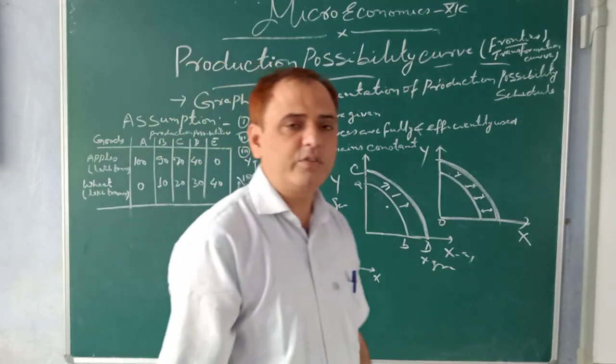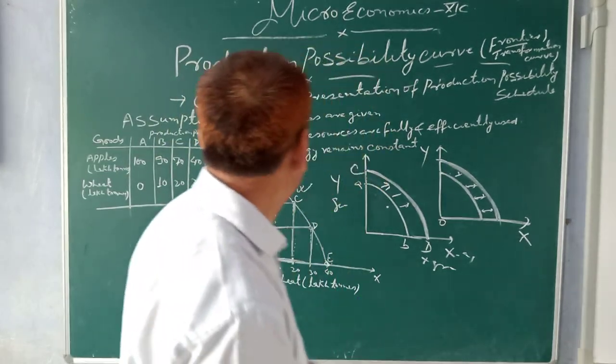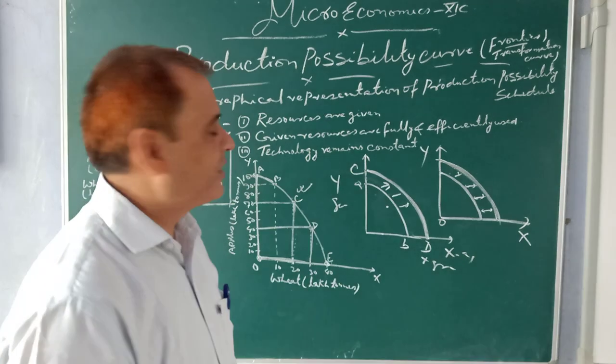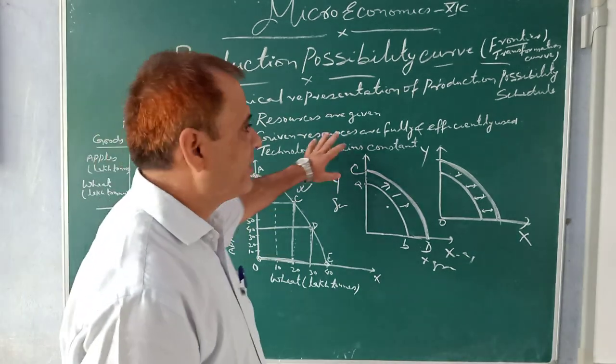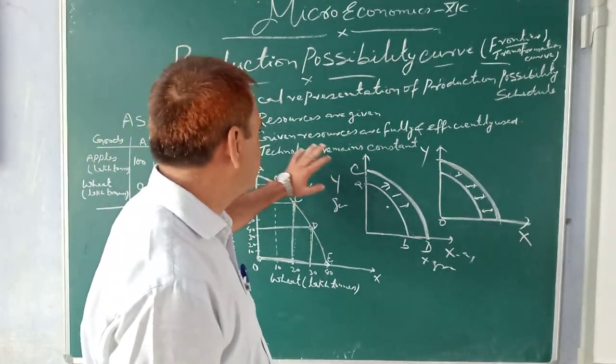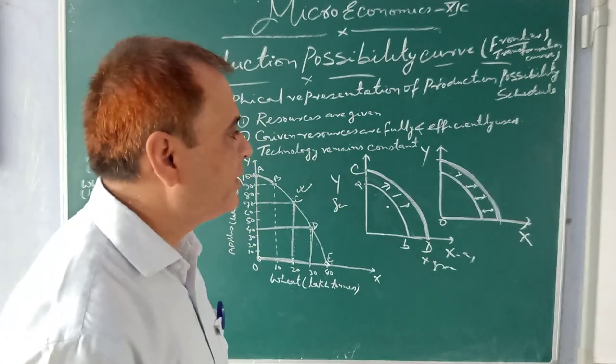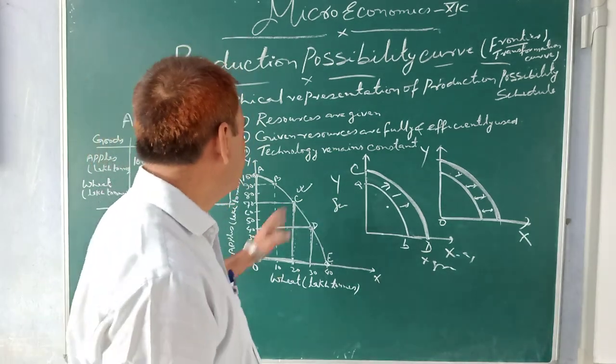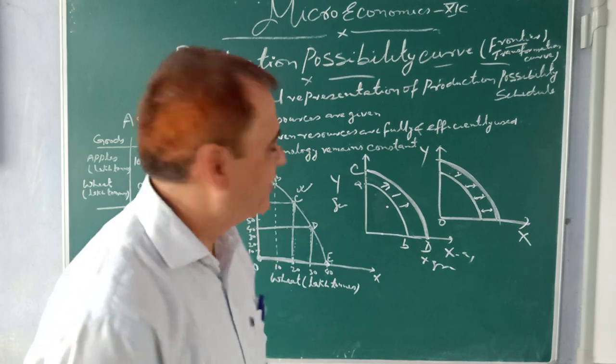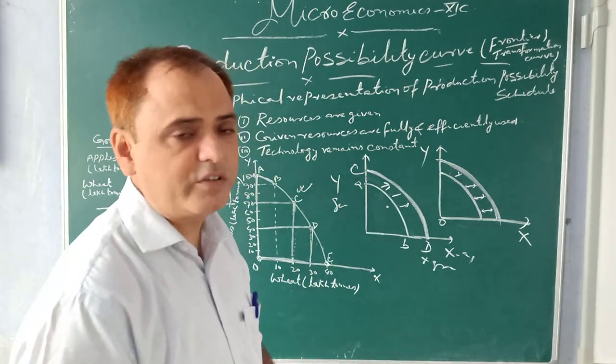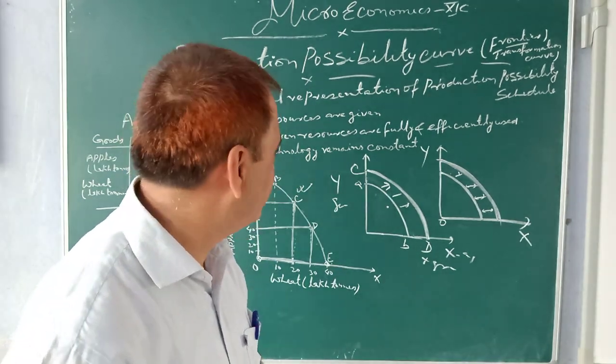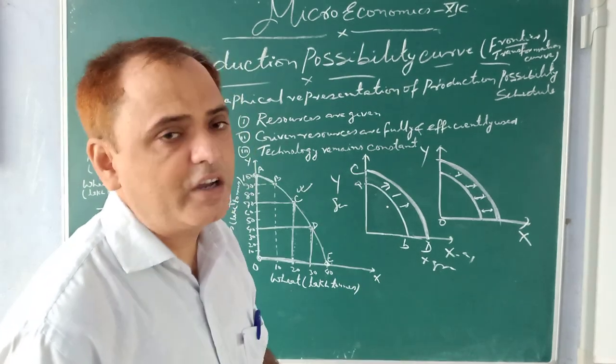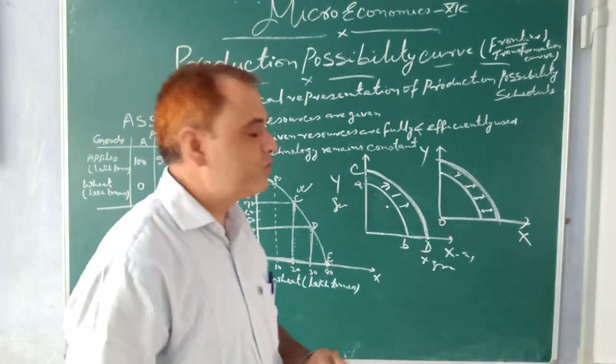So there are some assumptions before we start. Resources are given. Second is these resources are fully and efficiently utilized. And third is technology remains constant. These are assumptions - all the resources should be given, and given resources are fully and efficiently utilized, and technology remains constant.